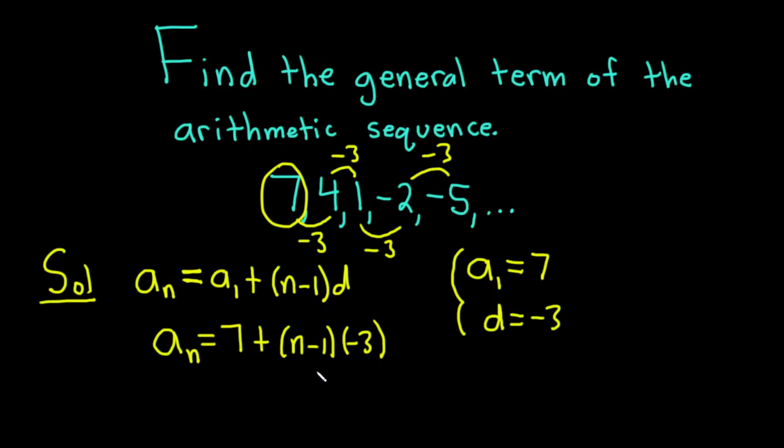Now you could leave your answer like this, but it's probably not good. So let's clean it up. A sub n is equal to 7. Now we can distribute this negative 3. Negative 3 times n is negative 3n, and then negative 3 times negative 1 is positive 3.